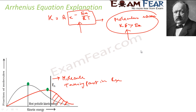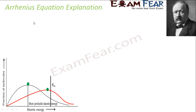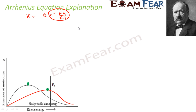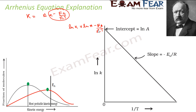So with that explanation, Arrhenius gave this equation: K equals A times e to the power minus Ea by RT. This part represents the molecules that take part in the reaction. Taking the natural log on both sides, you get: ln K equals ln A minus Ea by RT.